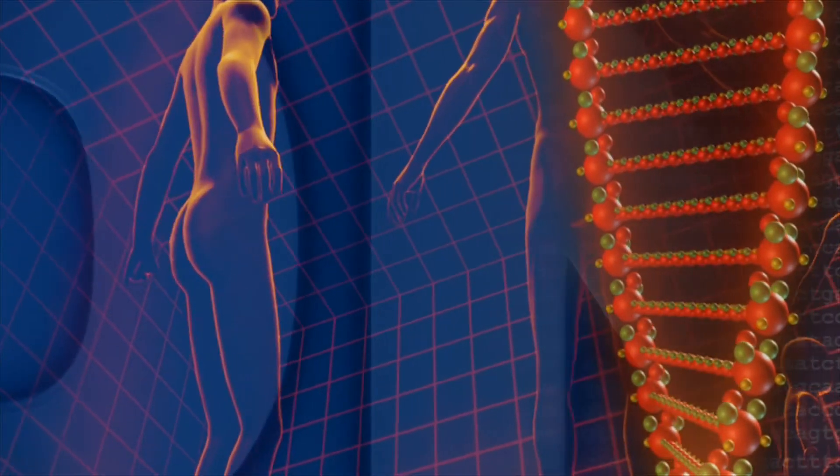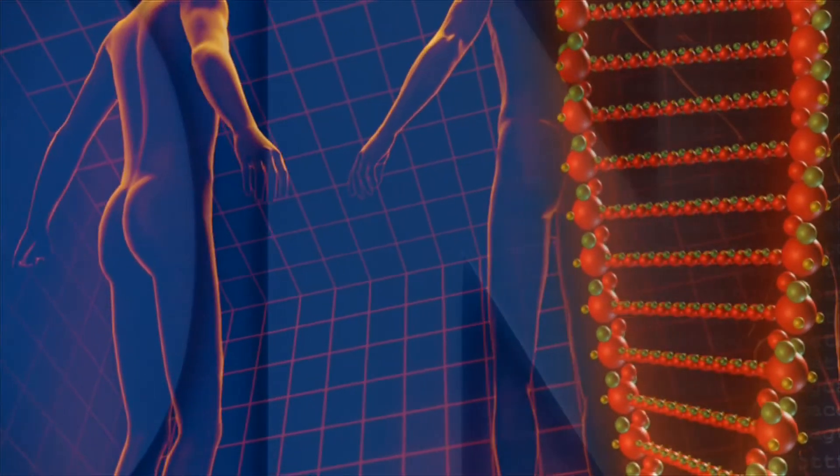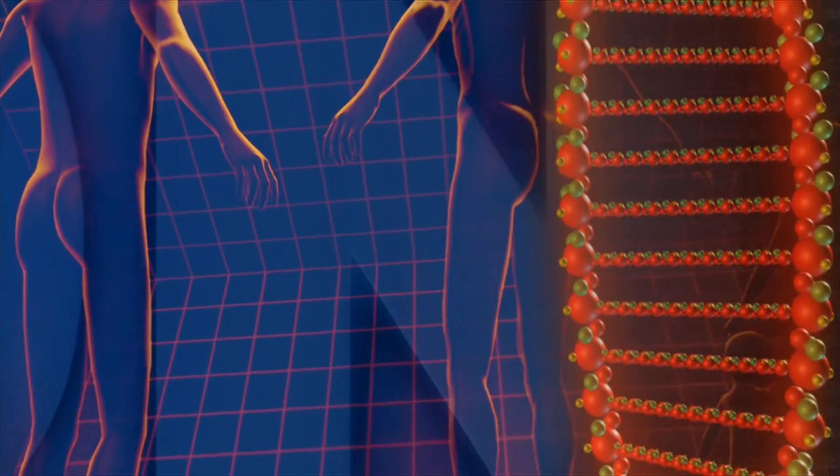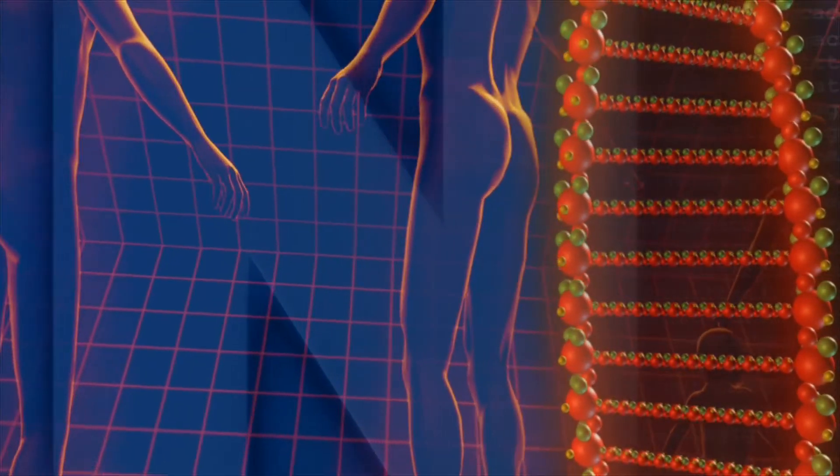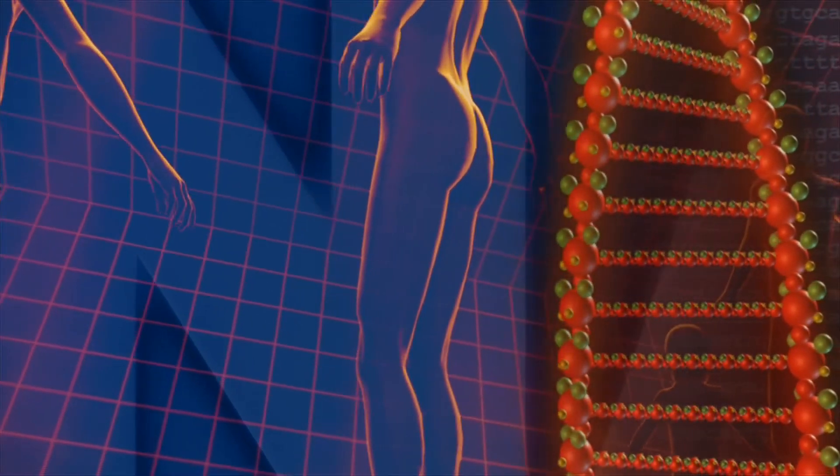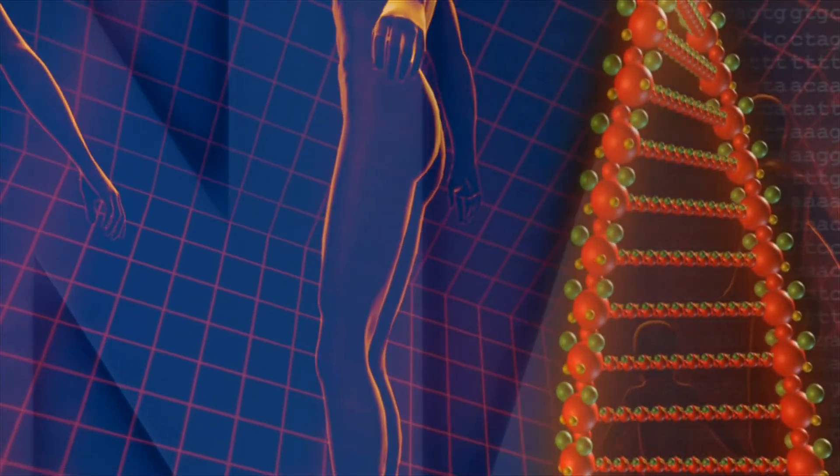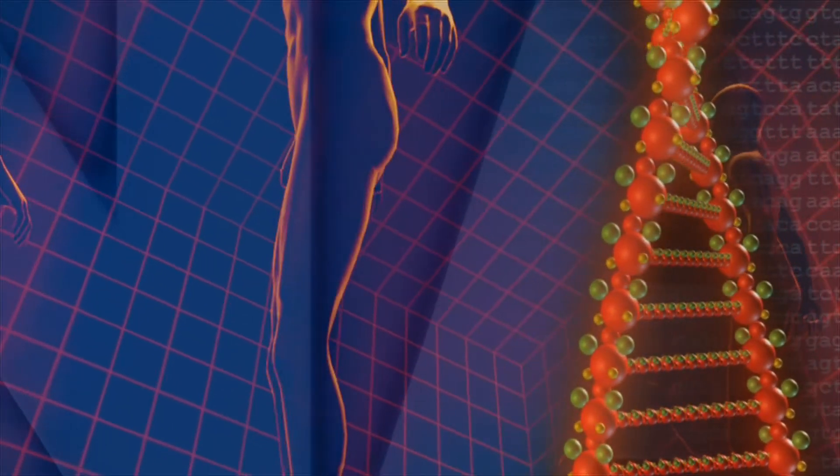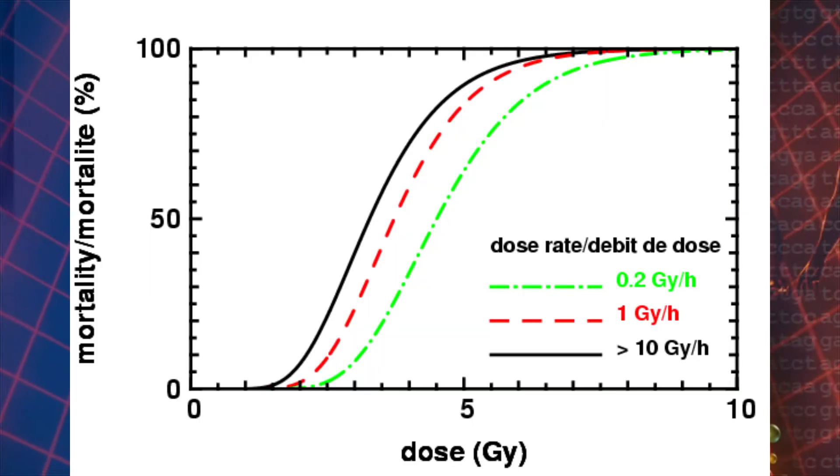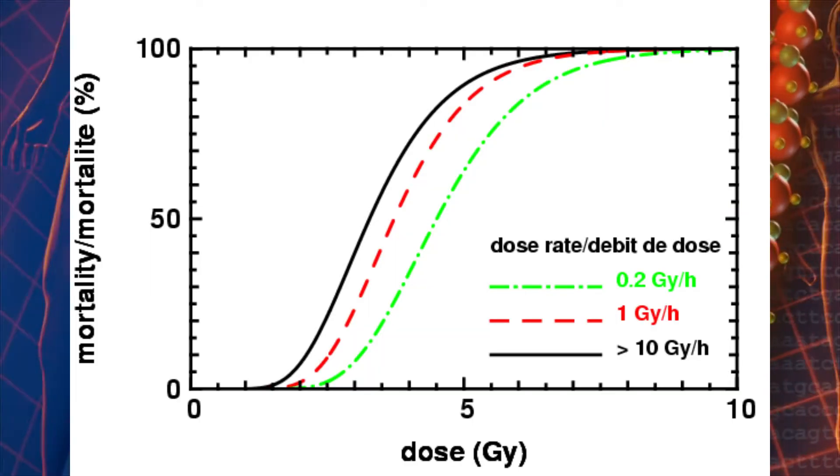We spoke about how much radiation is needed for particular systems, that being the hemopoietic, which is your bone marrow fundamentally, the gastrointestinal, which is your intestines and stomach, and the neurovascular, which is your brain and the arteries and veins associated with it. Not all doses need to be specific to have the kind of effects that we're talking about.